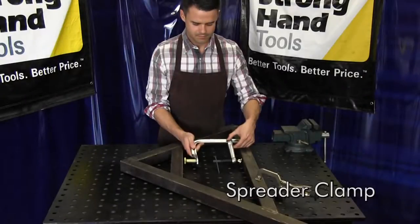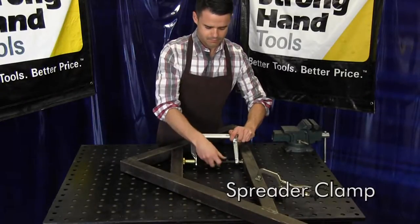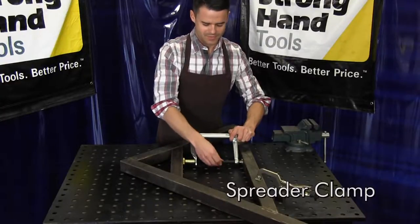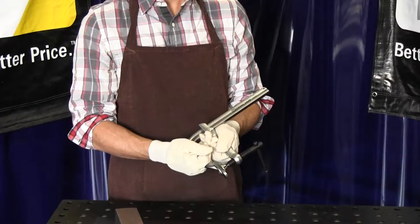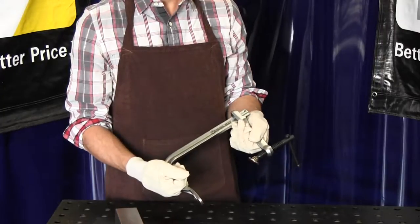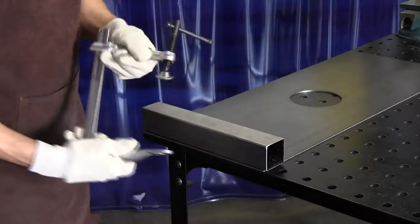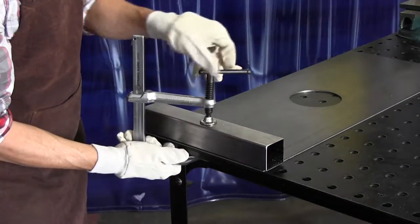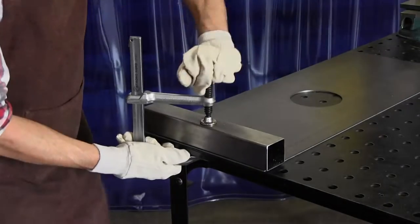The 4-in-1 utility clamp is 10 times faster than a C-clamp because you're sliding the arm into position instead of turning a threaded screw as you would on a C-clamp. So the 4-in-1 clamp is setting up faster and easier with greater stability.